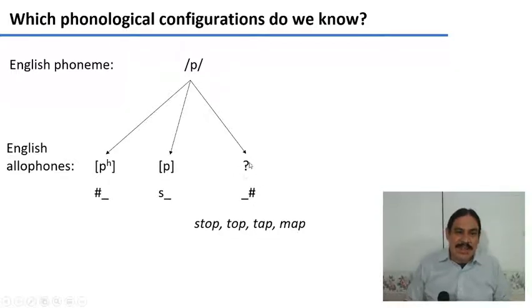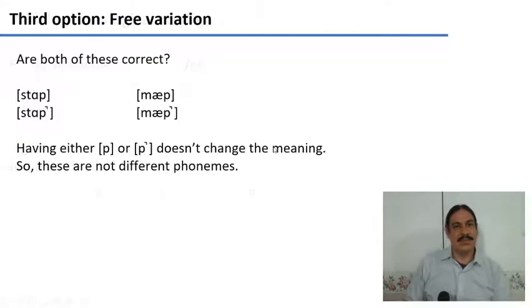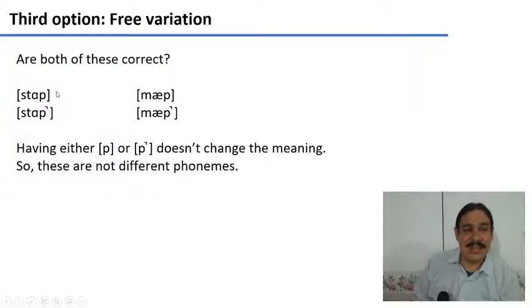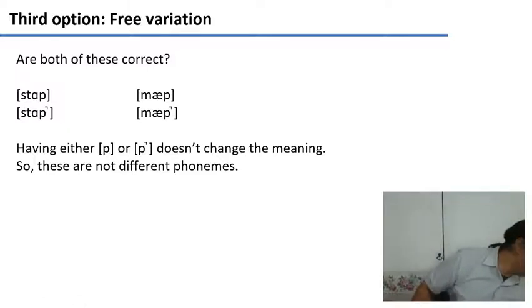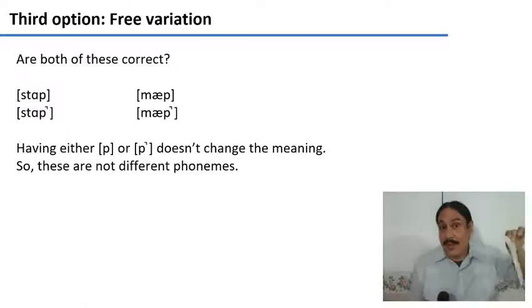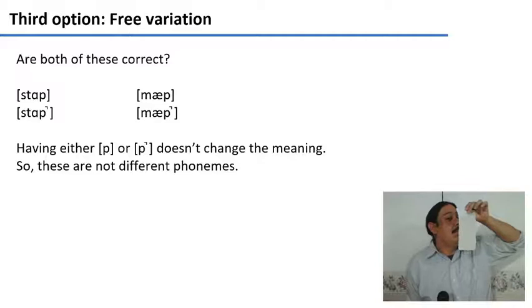What is the allophone that English uses when the P occurs at the end of a word? Maybe you were saying these ones, maybe you said something like stop or map. And again, my scientific instrument, they really are not aspirated. Stop, map.